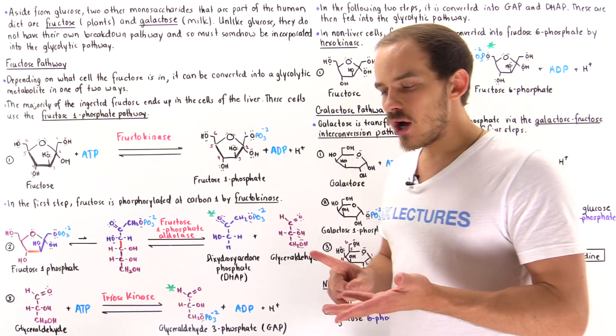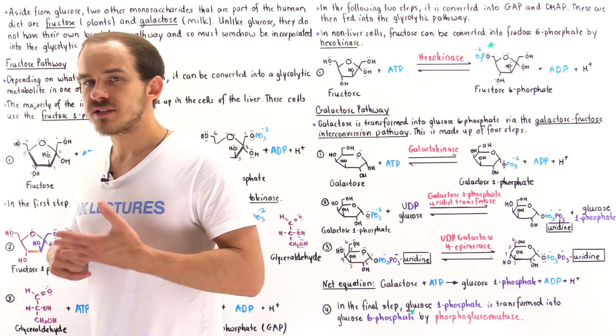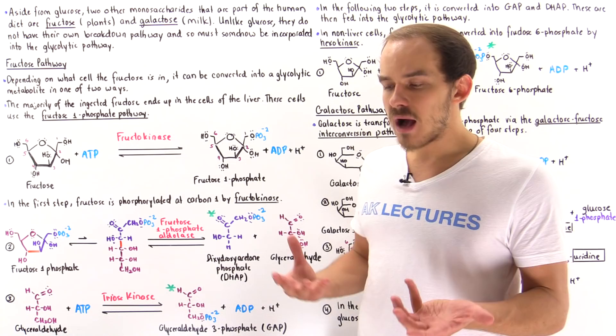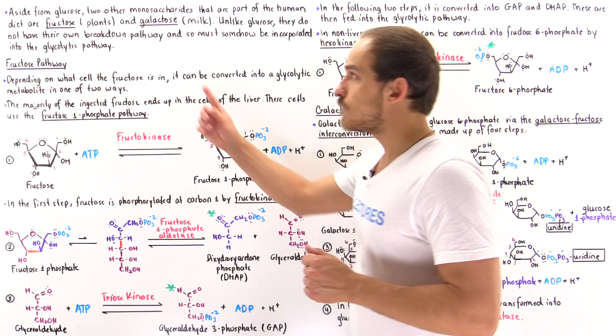When we ingest glucose and it makes its way into the cytoplasm of our cells, our cells begin the glycolytic pathway. This breaks down that glucose into ATP molecules, pyruvate molecules, and other molecules. But what happens when fructose or galactose actually make their way into the cytoplasm of our cells?